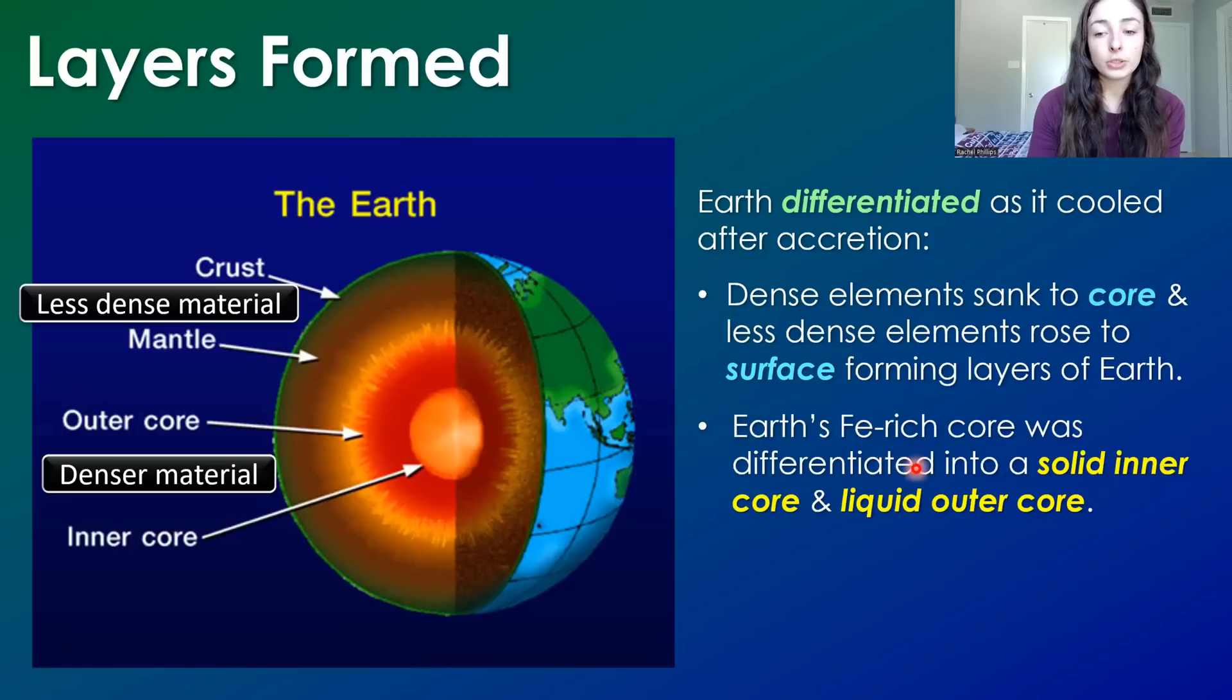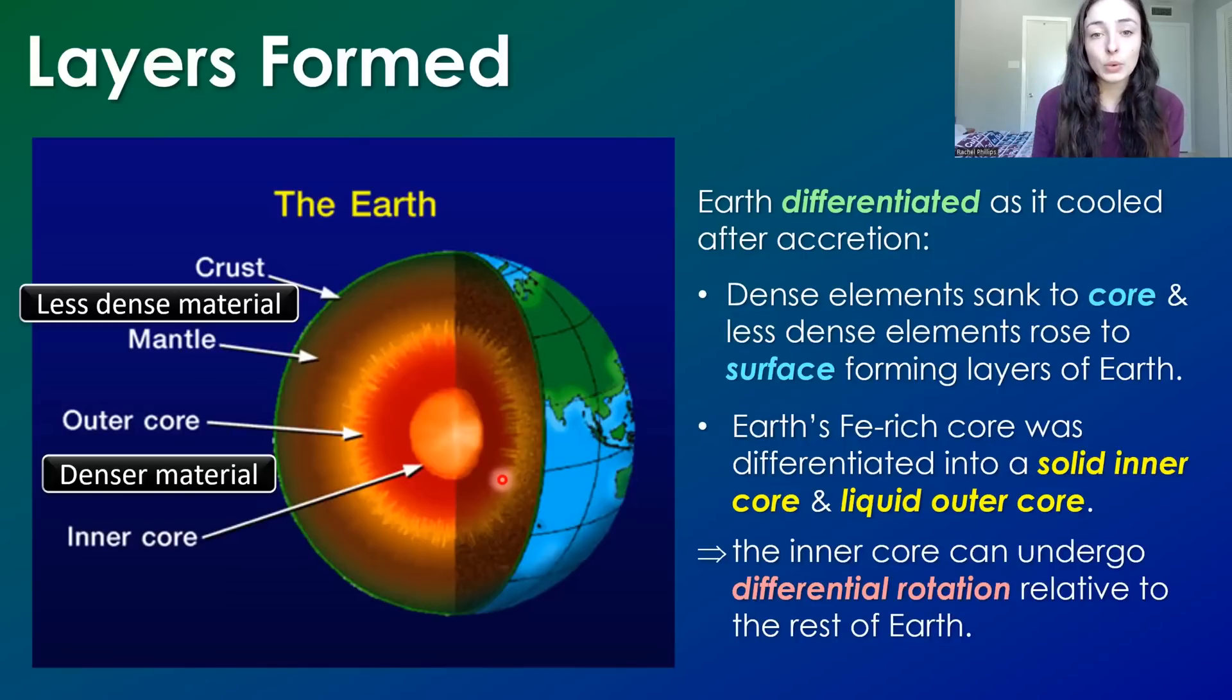Earth's iron-rich core was also differentiated into an inner and outer core. The inner core is solid and the outer core is liquid. Because of this liquid layer that separates the inner solid core and the rest of Earth, the inner core can undergo or is likely to undergo something called differential rotation, meaning it doesn't have to rotate the same way or the same rate as the rest of Earth. Or at least this is what's been proposed by the most recent paper that all the news people are going nuts about and other papers that have talked about differential rotation of the inner core in the past. And I will link all of the papers I mentioned and reference in this video in the description box below.